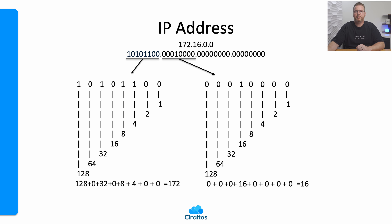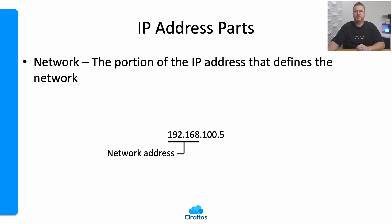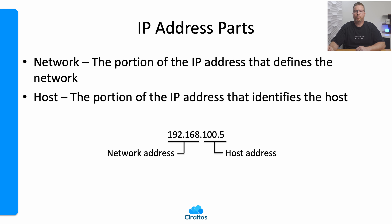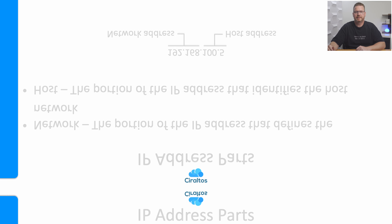There are two parts in an IP address: the network address and the host address. The network address is unique to all connected networks — it identifies the network and is used to route traffic between different connected networks. The network number is also frequently called a subnet. A subnet defines what part of the IP address is the network number. The host is unique within the network — it's the portion of the IP address assigned to the client.